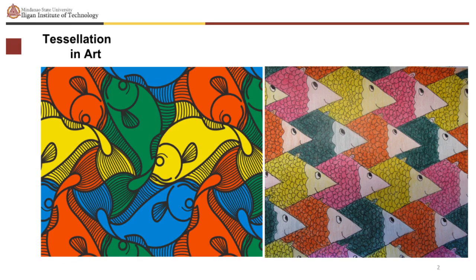Tilings refers to patterns of regular polygons. Tessellations differ from tilings in the sense that tessellations can be made of irregular shapes.